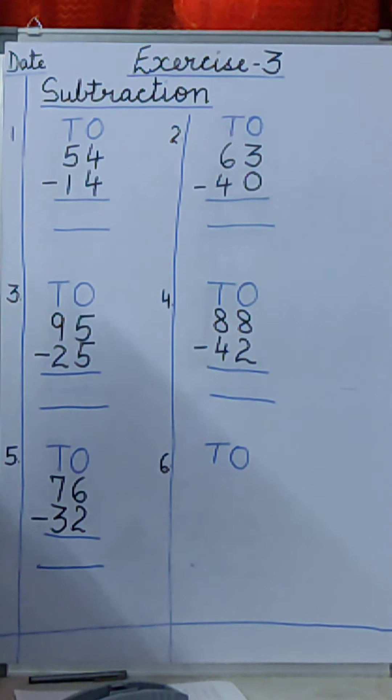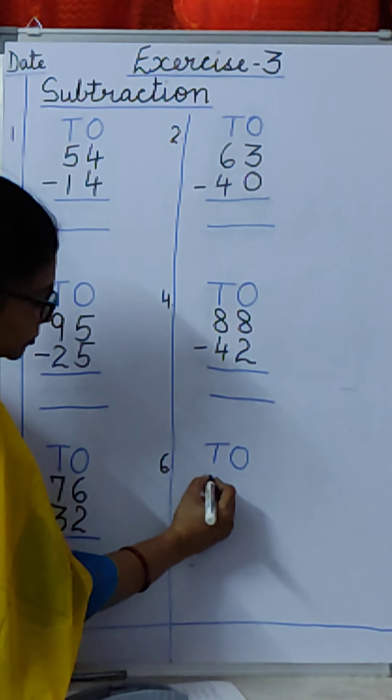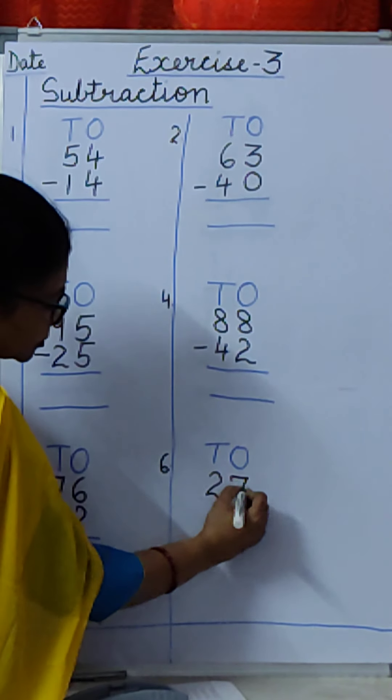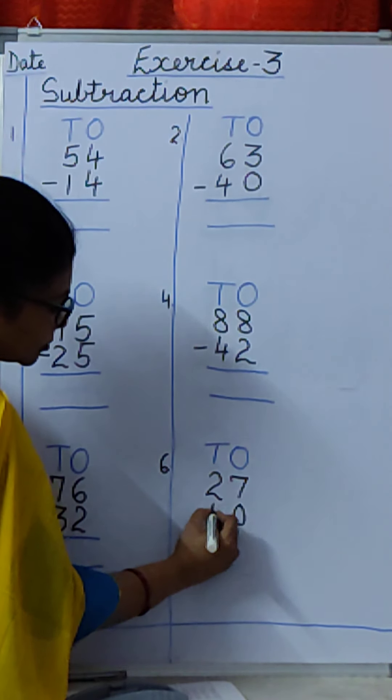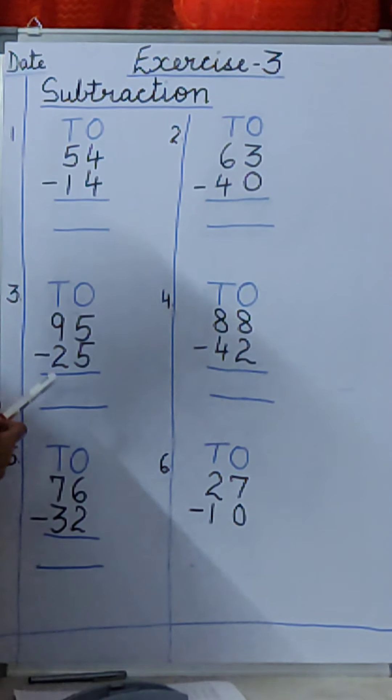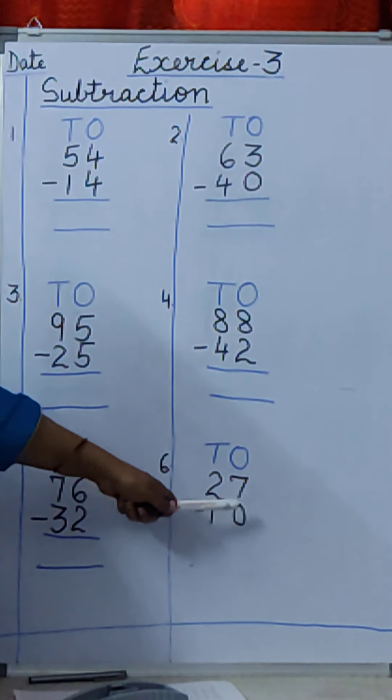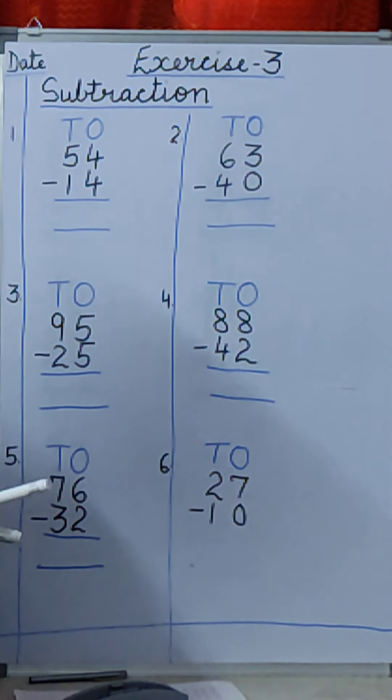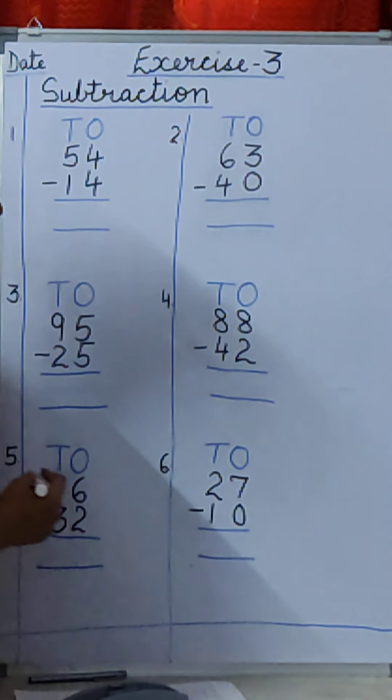The last one is. Again this is number 6 one is. T.O. 27 minus 10. And then you will draw your line with a blue pencil.